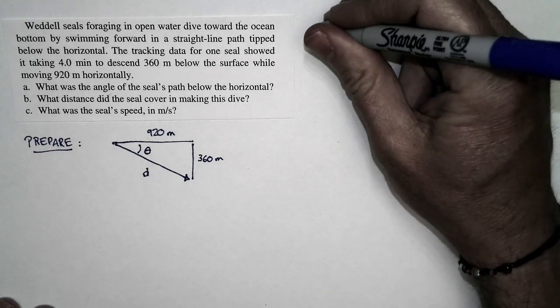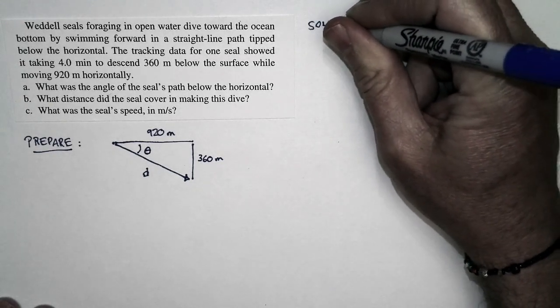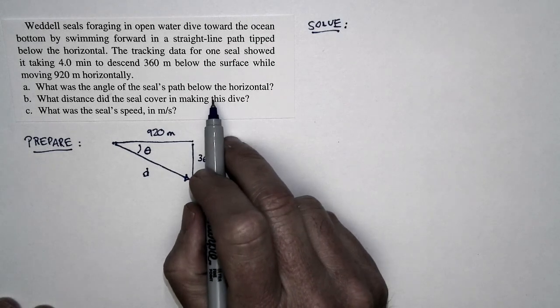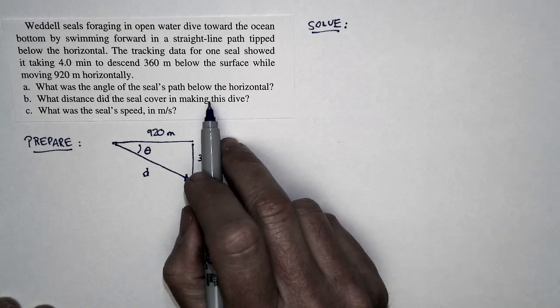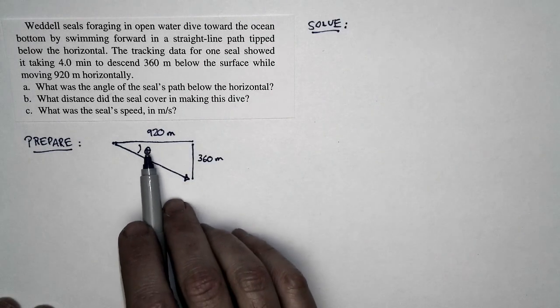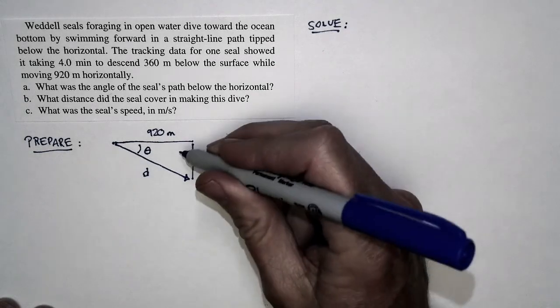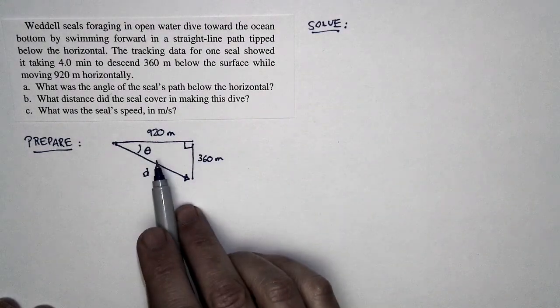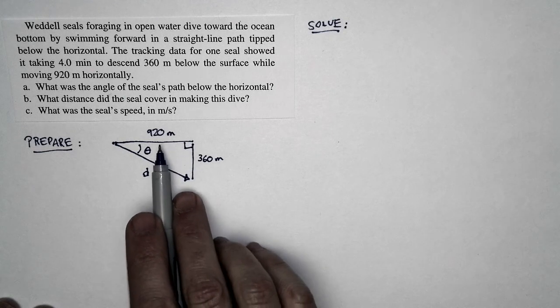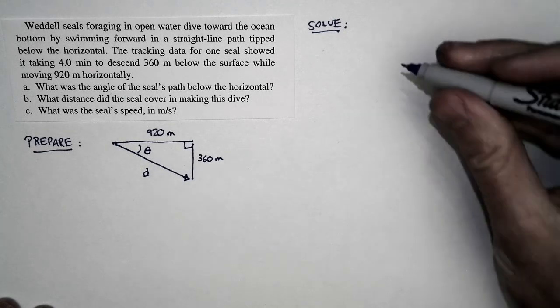Now we're ready to do some solving. We're going to start with part A. What is the angle of the seal's path below the horizontal? If I look at this angle theta, this triangle is a right triangle. The opposite side is 360 meters. The adjacent side is 920 meters.